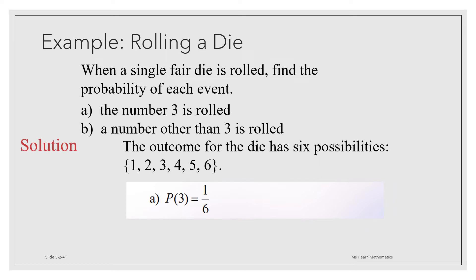1, 2, 4, 5, and 6. There are 5 of these. So we would divide 5 by 6 to get the probability of not 3. There's a relationship between the probability of 3 and the probability of not 3. Can you spot it?